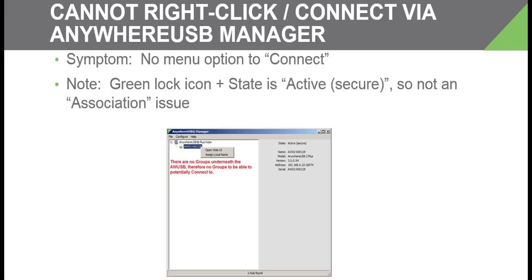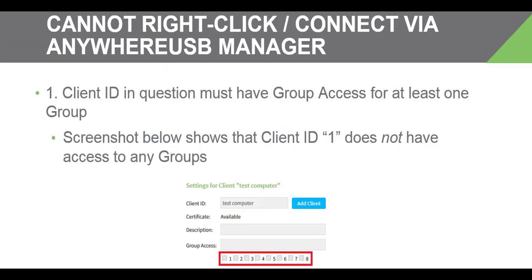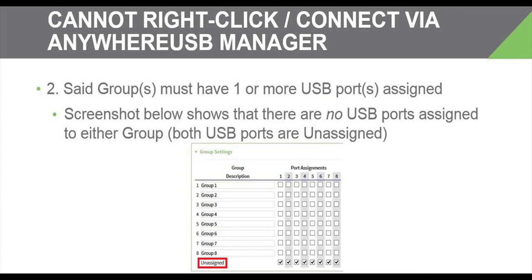If the host computer is associated with the Anywhere USB Plus but there is no option to connect in the Anywhere USB Manager, this could be due to the client ID in question not having access to any groups. This issue could also be due to no USB ports being assigned to the group in question.